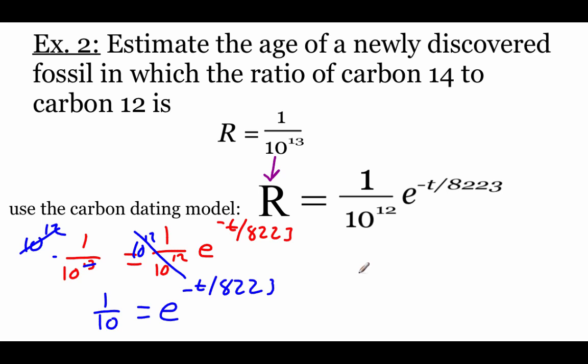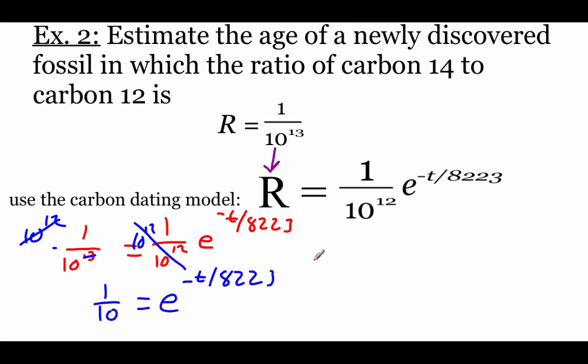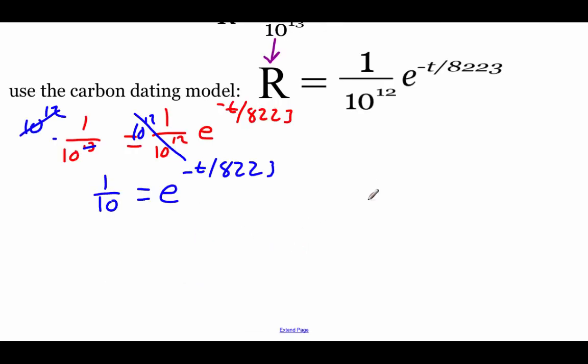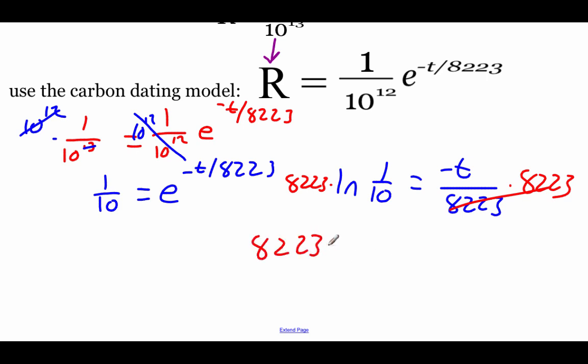And again, I think we're going to rewrite this one as a logarithmic problem. This is a base e exponential, so when we rewrite it, it'll be a natural log. So natural log of 1 over 10 equals negative t divided by 8,223. Now in order to move that divided by 8,223, we'll end up multiplying to get those things to cancel out. So then our equation says 8,223 times the natural log of 1 over 10 equals negative t.